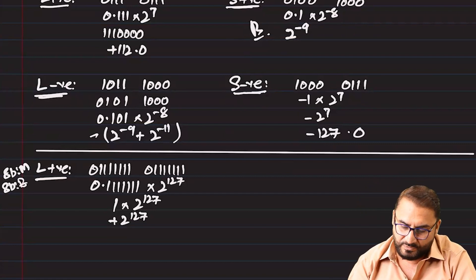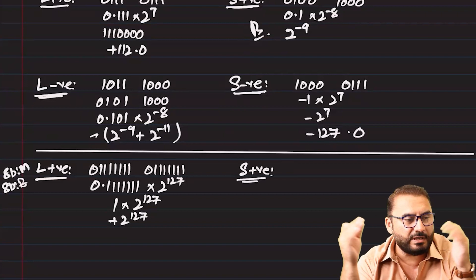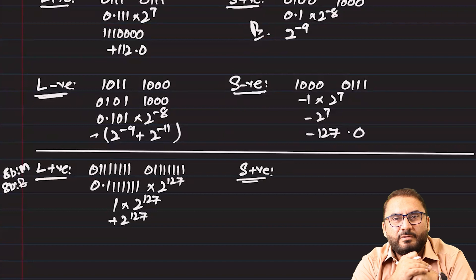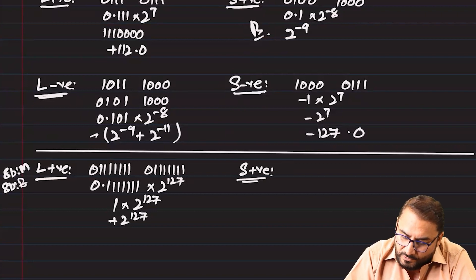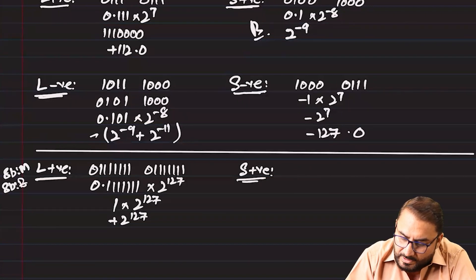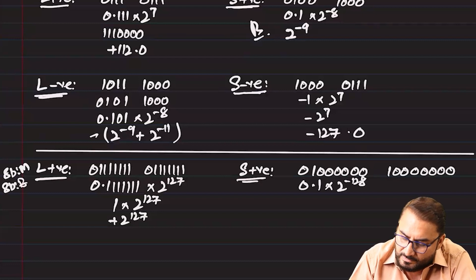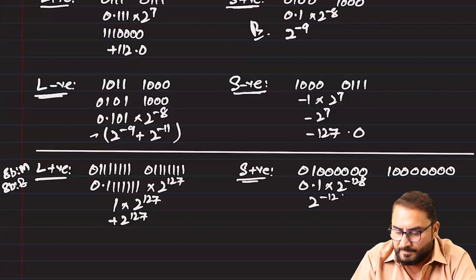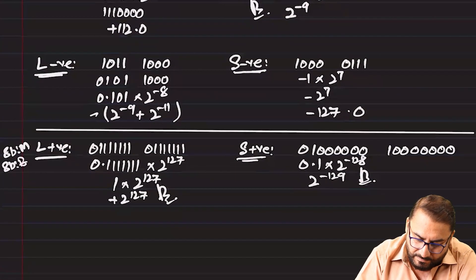For the smallest positive number with 8-bit mantissa and 8-bit exponent: the exponent is the largest negative in 8-bit two's complement, which is −128. So we have 0.10000000 × 2^(−128), which equals 2^(−129). That is the smallest positive number for 8-bit mantissa and 8-bit exponent.